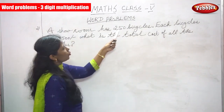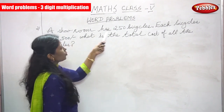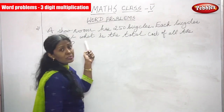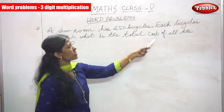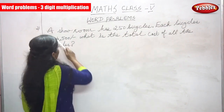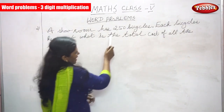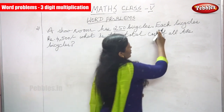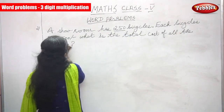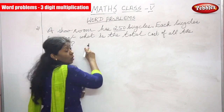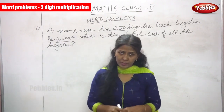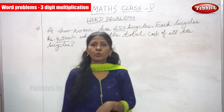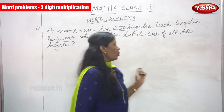A showroom has 250 bicycles. Each bicycle costs rupees 4500. What is the total cost of all the bicycles? How many bicycles? 250 bicycles. The cost of each bicycle is 4500. So what is the total cost of all the bicycles in the showroom? That is the question. I am going to solve the problem.